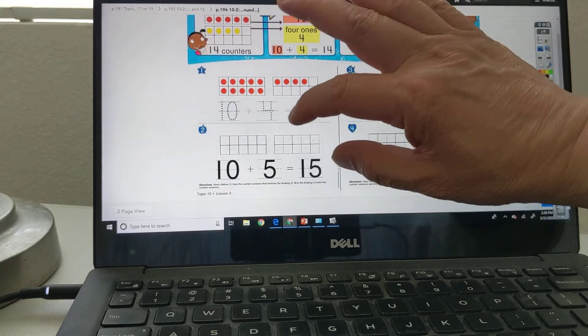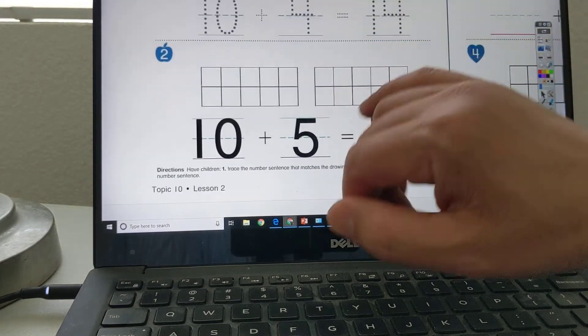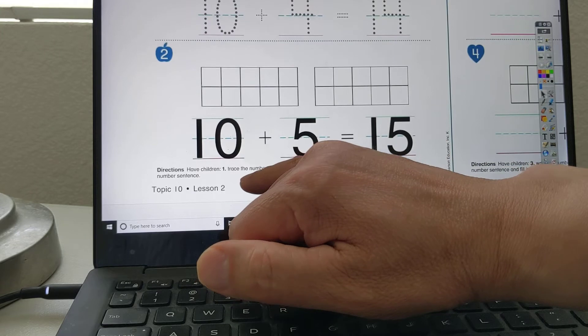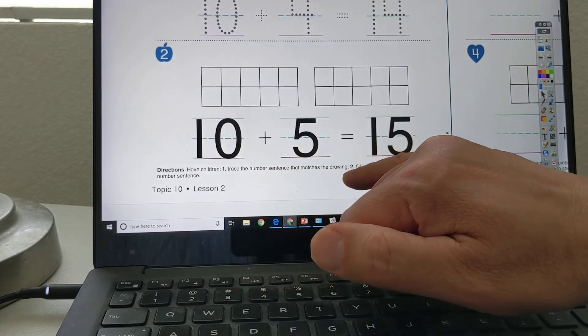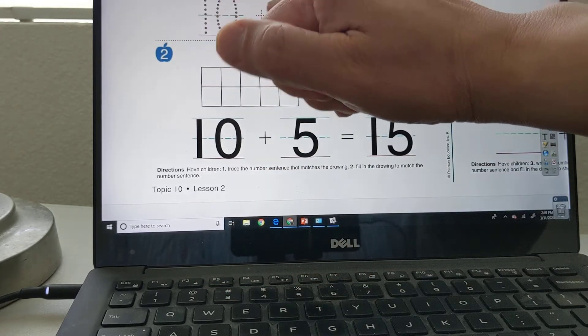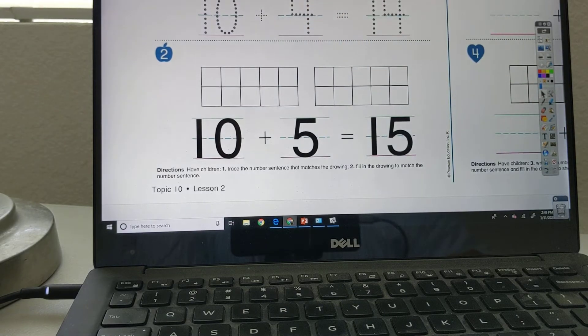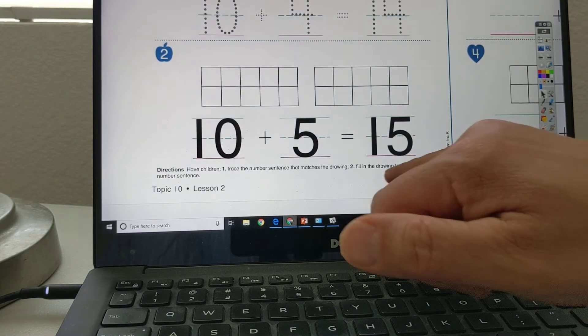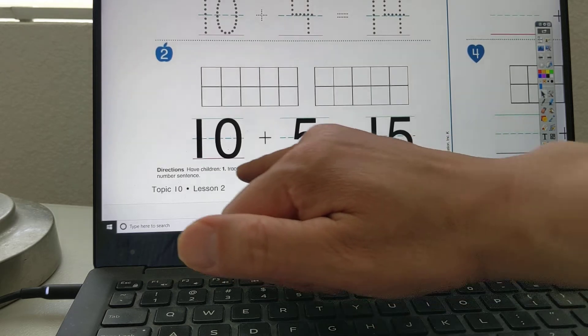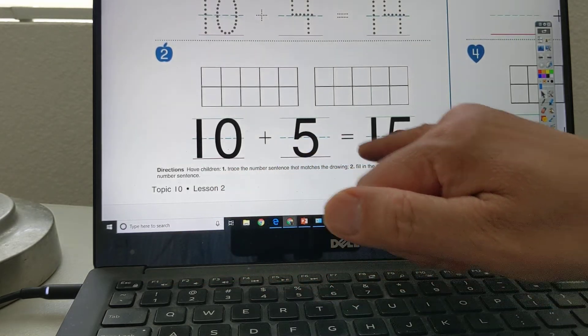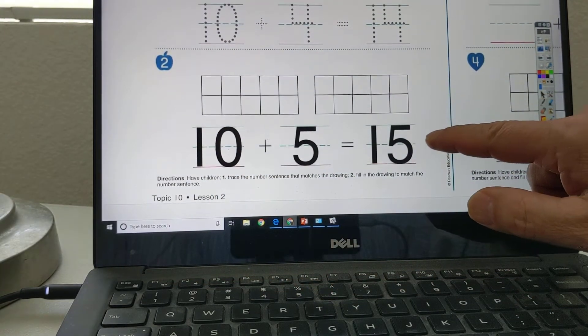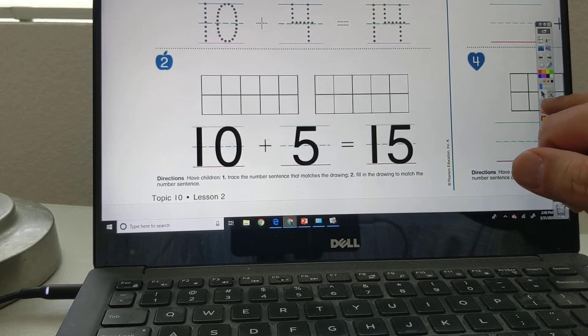Now we come to here. Let's see what it says. Have children 1. Trace the number sentence that matches the drawing. So you just trace this. Or you just copy this number onto your writing journal. Number 2. Fill in the drawing to match the number sentence. So again, it's a very similar concept. You fill in the drawing.